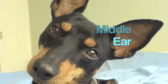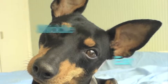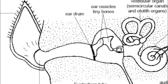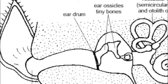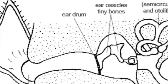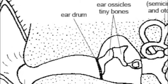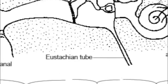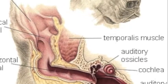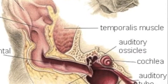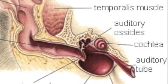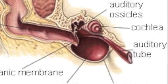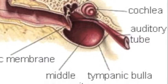The middle ear consists of the tympanic membrane, also known as the eardrum, the three auditory ossicles — the malleus, stapes, and incus — the eustachian tube, which maintains air pressure in the ear, the oval window that separates the middle and inner ear, the round window which receives sound waves, and the tympanic bulla, which is an osseous chamber at the base of the skull.